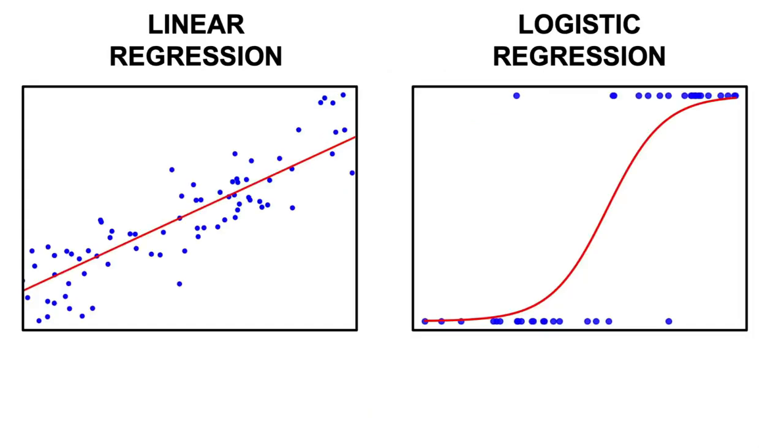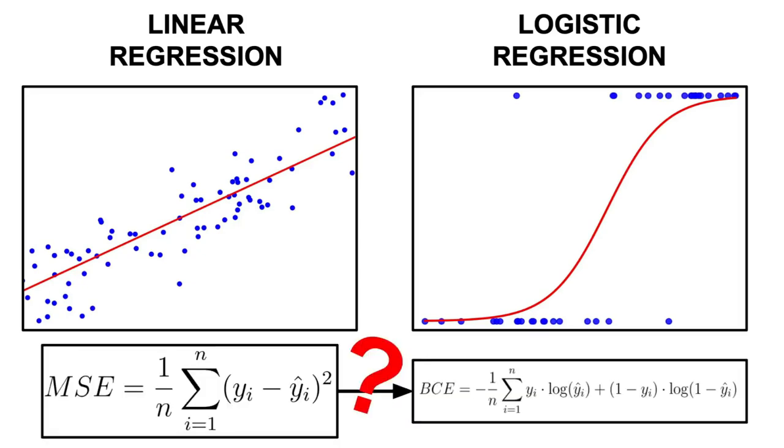However, the part which didn't really make sense for me, at least not in the beginning, was why we also changed the mean squared error loss function that we used to compute the difference between our predictions and the target labels, replacing it with the binary cross-entropy loss function. Well, this will be the subject of this video, so if you want to find out why, stick with me for the rest of it.